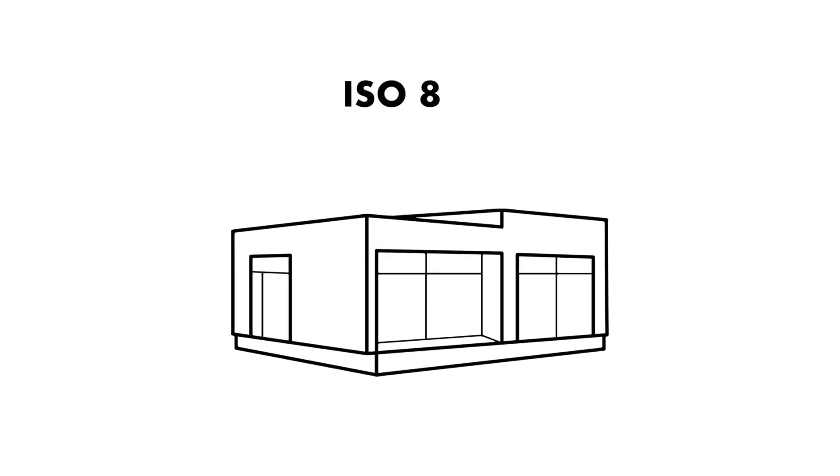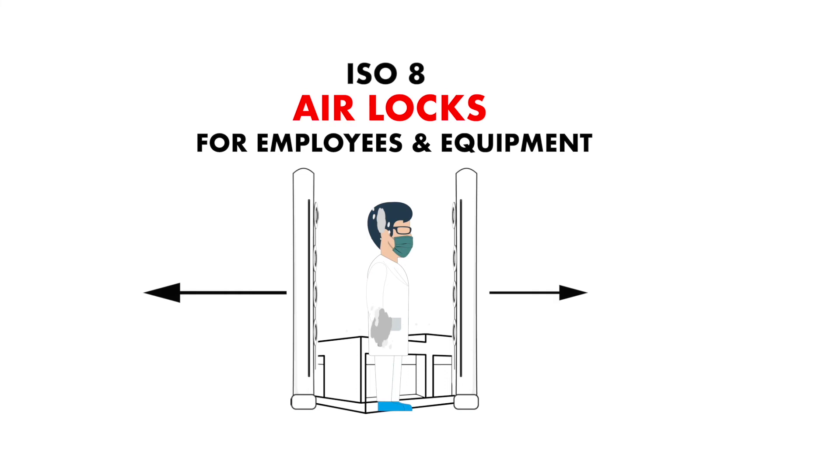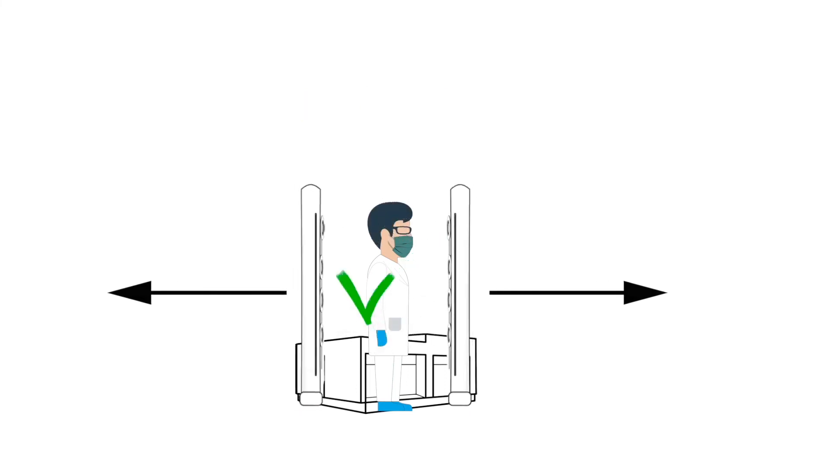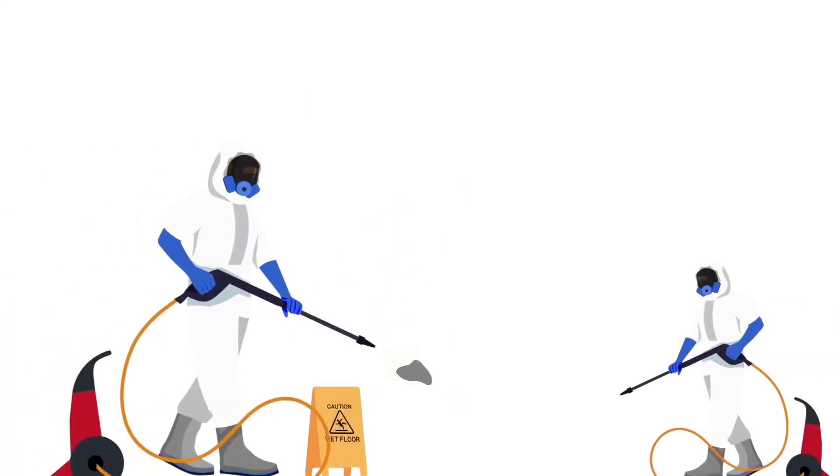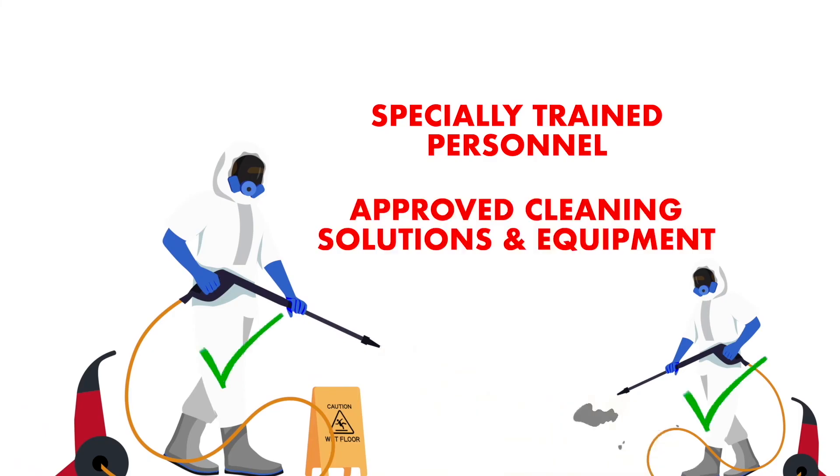Clean rooms classified as ISO 8 or cleaner will need airlocks for employees and equipment to transition to and from the space. Clean rooms should only be cleaned by specially trained personnel using approved cleaning solutions and equipment.